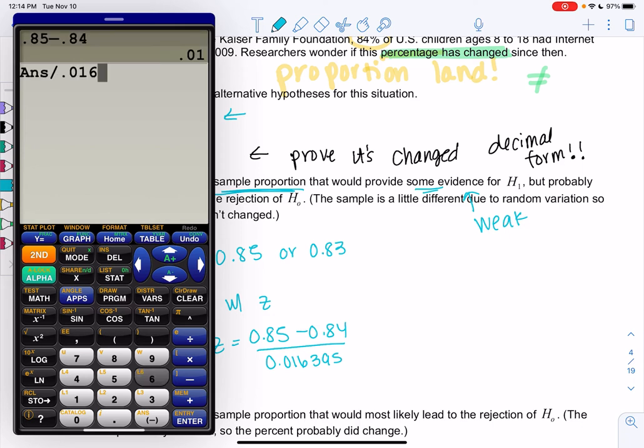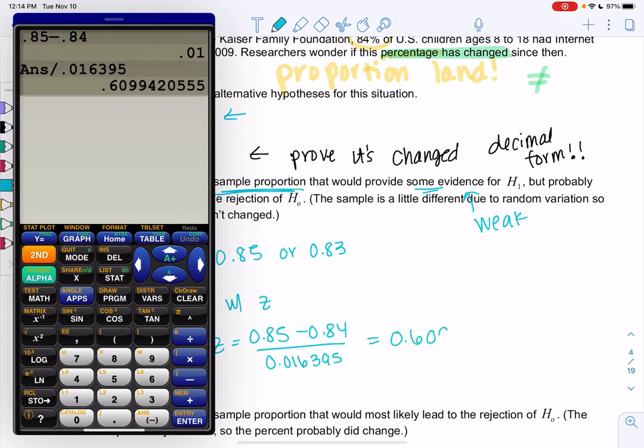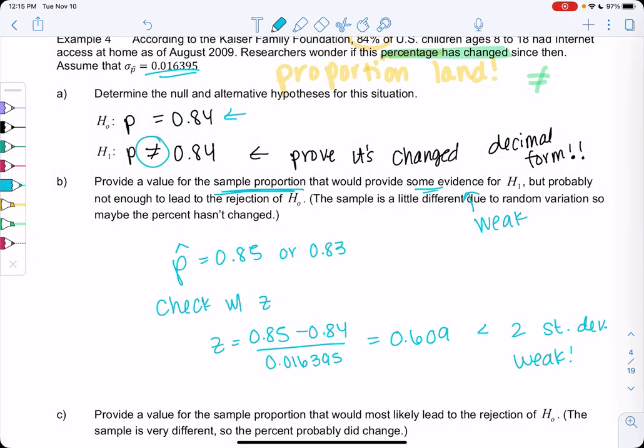And we want to get a z-score less than 2 for weak evidence. So if you don't get less than 2, pick another number. Yeah, and we get 0.609. So it's less than 2 standard deviations. So it's weak.